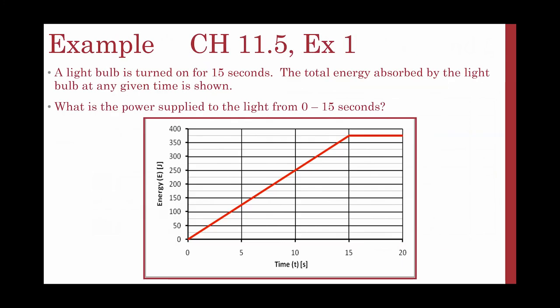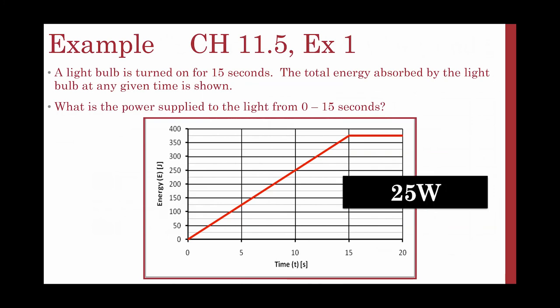We have a light bulb turned on for 15 seconds, and the total energy absorbed by the light bulb is shown in an energy versus time graph. We're trying to find the power supplied from 0 to 15 seconds. I need to calculate the slope of that graph — the triangle area here — which gives 25 watts.